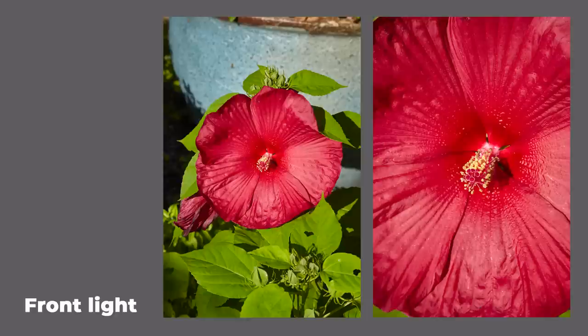Here's an example of front light — a large dinner plate hibiscus with the sun almost directly behind me. If you come in tight and don't show a big scene, you can see where deep shadows start to appear. But if you're in tight and it illuminates a broad, flat subject, this is an instance where front light will work fairly well.